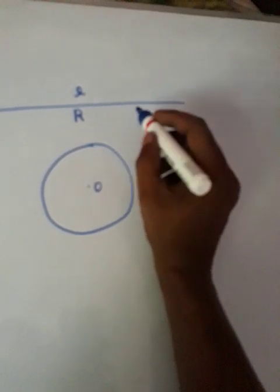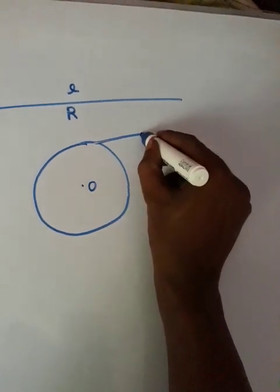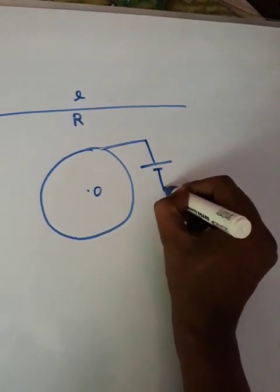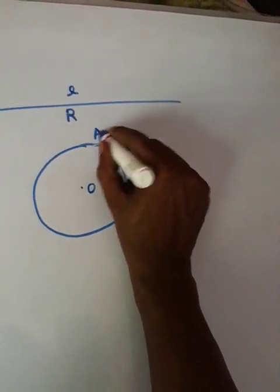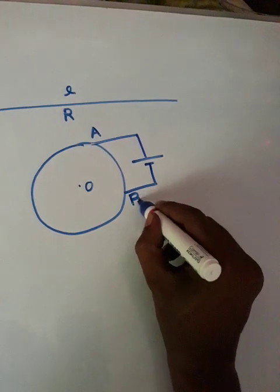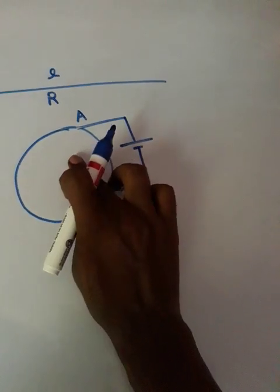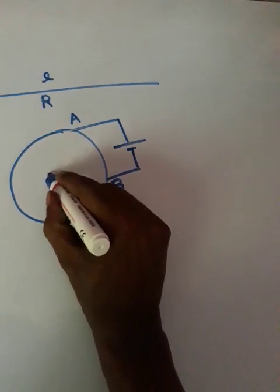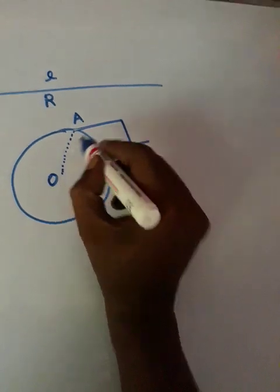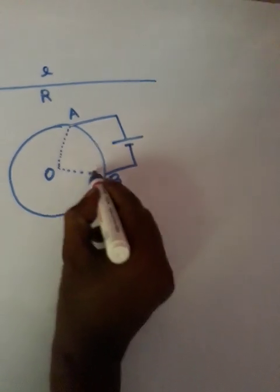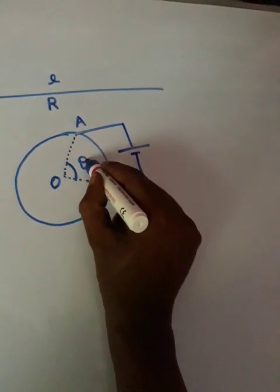Now we can connect a battery between any two points of the wire. Let A and B be those two points where we connected the battery. The question now is: what is the equivalent resistance? The angle here is theta.